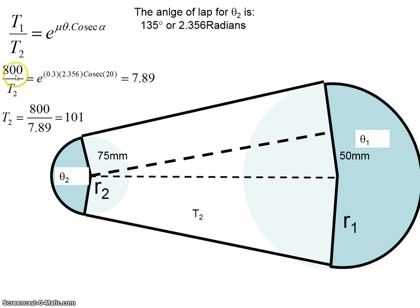T1 is 800 newtons, e is Euler's number, 0.3 is the coefficient of friction, 2.356 is θ in radians, and alpha is 20 degrees. We need to get the cosine of that. When we multiply that out, we get T2 equals 101 newtons.